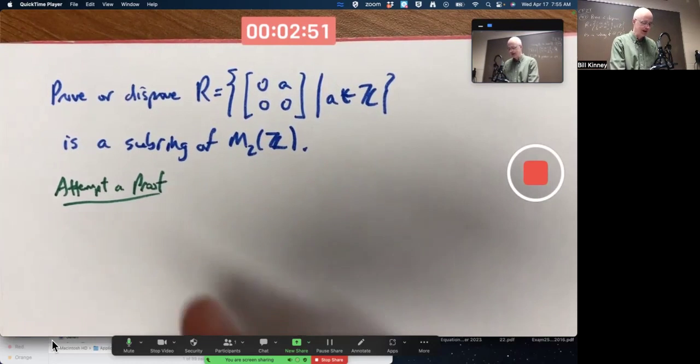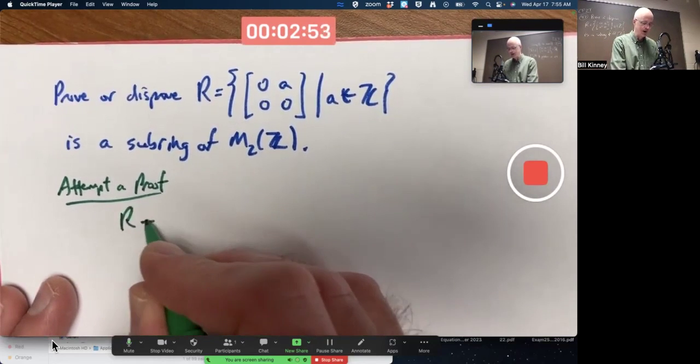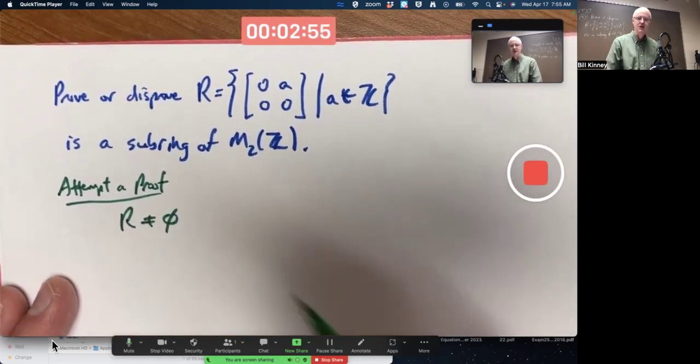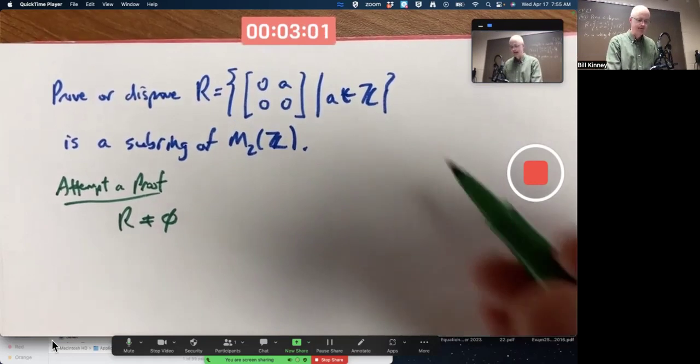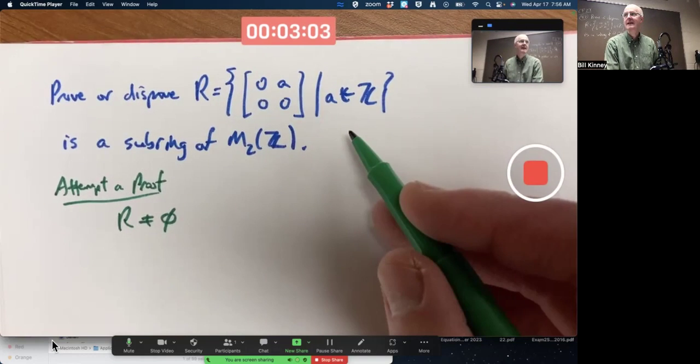It is certainly, first of all, a non-empty set. That technically is part of the condition for being a subring is that the set you're looking at does have to be non-empty. Well, it's obviously not empty because A can be any integer. It's, in fact, an infinite set.